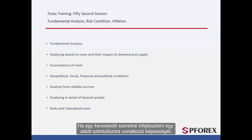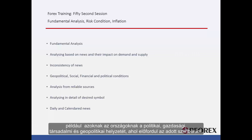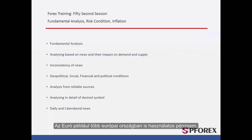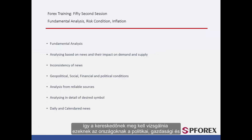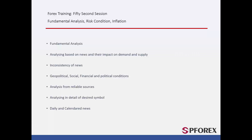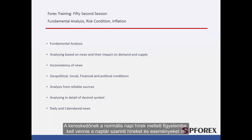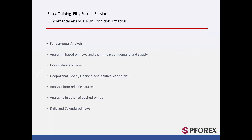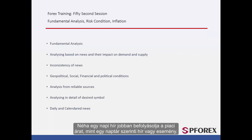When a trader wants to develop his or her ability on a symbol, he or she should thoroughly analyse and study all aspects of that symbol — such as the political, economic, social and geopolitical situations of the countries that represent that symbol. For instance, the Euro is the currency used in most European countries, so a trader should check the political, economic and social conditions of those countries. A trader should also consider calendared news and events alongside normal daily news, as daily news may sometimes have a more considerable influence on market price than a calendared event.